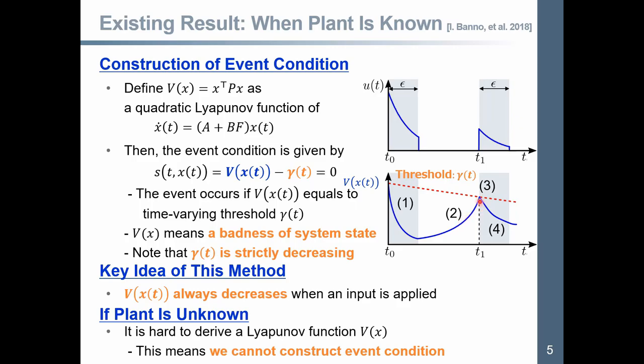Second, when input is zero, then Vx t is increasing if matrix A is not Hurwitz. Third, if Vx t equals threshold gamma t, then input is applied again. Finally, Vx t is now strictly decreasing like step 1.